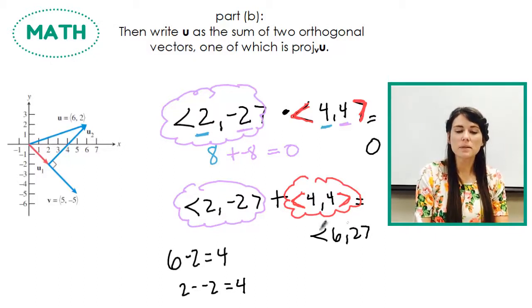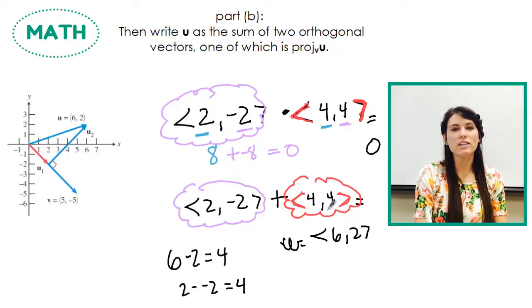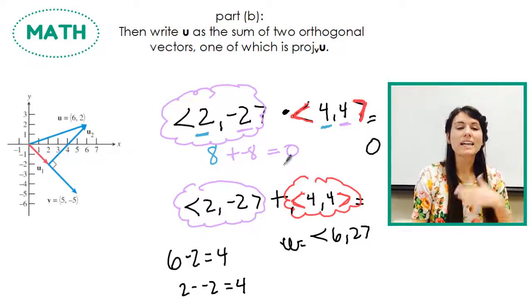They sum to my u. So my u was 6, 2. And that's it. I found 2 vectors that sum to give me u and are perpendicular to each other because their dot product is 0. And that is it.